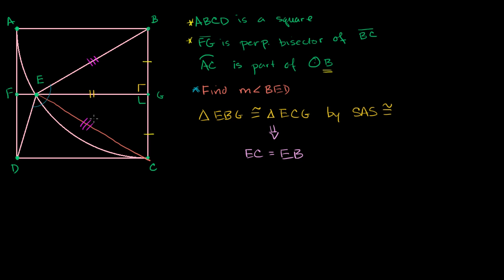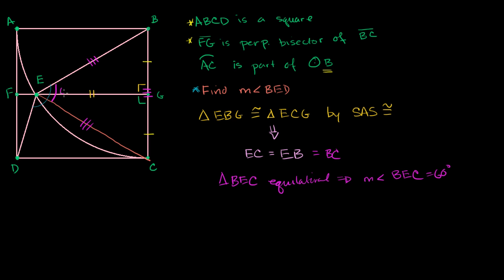What else is equal to that length? BE is one radius of the circle going from the center to the arc, and so is BC — it is also a radius going from the center to the arc. So EB equals EC equals BC, which means triangle BEC is equilateral. Since all three sides are equal, all angles are equal, so the measure of angle BEC is 60 degrees. BEC is part of angle BED, so if we can figure out angle CED, we add it to 60 degrees and we're done.